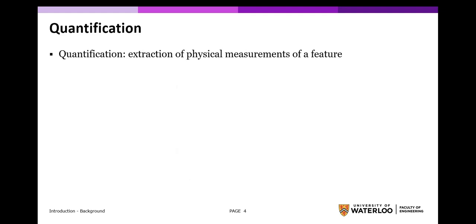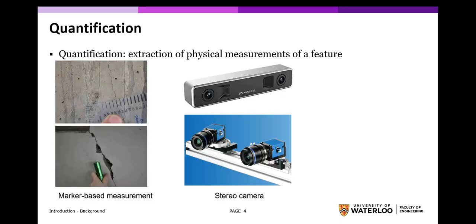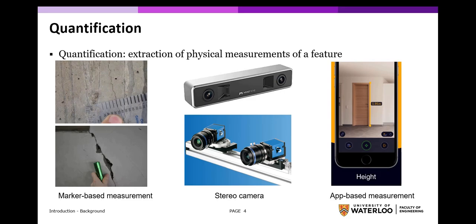Currently, three commonly known methods of quantification are marker-based measurements, stereo camera, and app-based measurements. Marker-based measurements involve including markers of a known size in the scene to quantify features such as cracks; however, this method is highly manual. Stereo cameras involve the use of two or more visual sensors, requiring calibration and specialized or custom setup, which can take additional time and resources. Third, app-based measurements is an augmented reality-based method that requires calibration on each startup using an accelerometer, gyroscope, and image data. User testing has shown that results may vary based on distance and environment, which heavily depend on the calibration process.